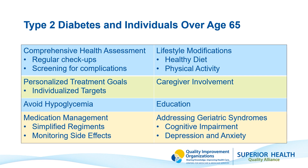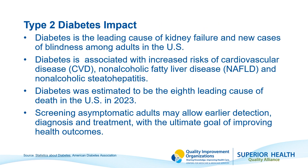Diabetes is the leading cause of kidney failure and new cases of blindness among adults in the United States. It's also associated with an increased risk of heart disease, because excess blood sugar directly impacts the heart, kidneys, liver, lungs, and brain. Non-alcoholic fatty liver disease is common among individuals with metabolic syndrome and is a significant risk factor for developing diabetes. Diabetes is estimated to be the eighth leading cause of death in the United States in 2023. Screening asymptomatic adults can allow for earlier detection, diagnosis, and treatment, with the ultimate goal of controlling glucose levels and preventing damage to the body's organs.